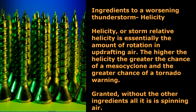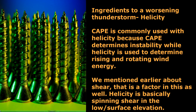And that is helicity. Helicity, or storm relative helicity, is essentially the amount of rotation in updrafting air. The higher the helicity, the greater the chance of a mesocyclone, and the greater the chance of a tornado warning. Granted, however, without all the other ingredients, all this is is spinning air. CAPE is commonly used with helicity because CAPE determines instability while helicity is used to determine rising and rotating wind energy. We mentioned earlier about shear as well, and that is a factor too, because helicity is basically spinning shear in the low, or surface, elevation.